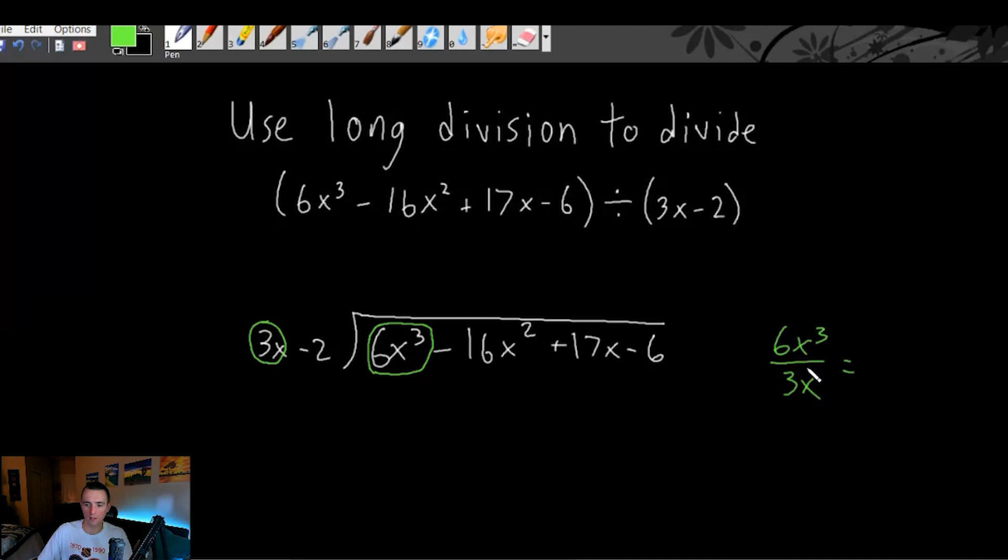If we simplify this down, the 6 will cancel with the 3 and turn it into a 2. The x cubed will change to x squared and cancel with this x. So we're just going to have 2x squared here. So we would write 2x squared.